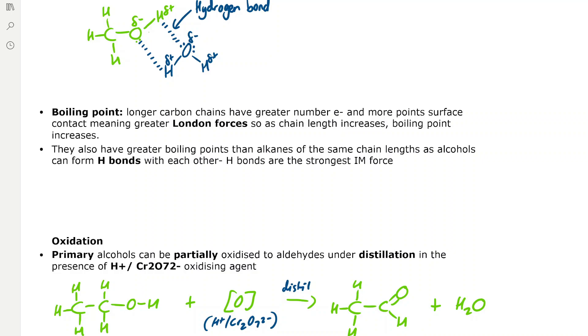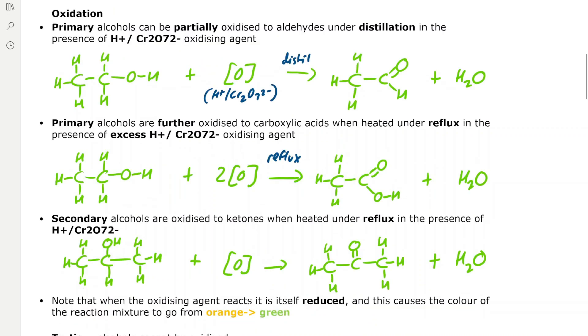Alcohols also have greater boiling points than alkanes of the same chain length, because alcohols can form hydrogen bonds with each other, and hydrogen bonds are the strongest intermolecular force — they're much stronger than London forces.